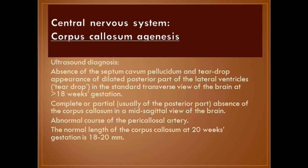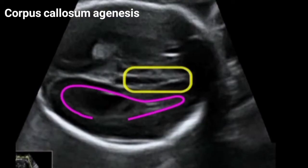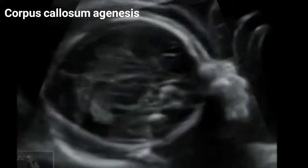Ultrasound diagnosis: absence of the cavum septum pellucidum and teardrop appearance of the dilated posterior part of the lateral ventricles in the standard transverse view of the brain at more than 18 weeks gestation. Complete or partial absence of the corpus callosum in the mid-sagittal view of the brain, and abnormal course of the pericallosal artery. The normal length of the corpus callosum at 20 weeks gestation is between 18 and 20 millimeters.